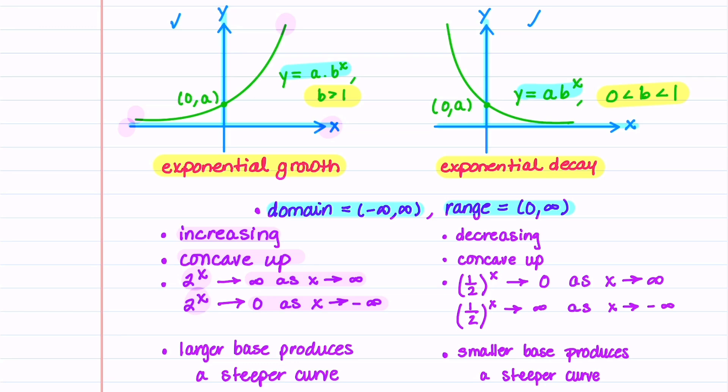Let's now turn our attention to the function on the right. This function is decreasing because it always goes from a larger value to a smaller value. It's concave up, just like the one on the left. And then if this graph was equal to one half to the x, it goes to zero as x goes to infinity, and it goes to infinity as x goes to minus infinity.